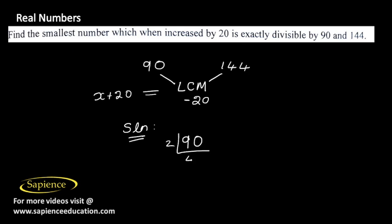90 divided by 2 is 45, 45 divided by 3 is 15, 15 by 3 is 5, and 5 by 5 is 1. Next we have 144, prime factorizing it, dividing by 2.